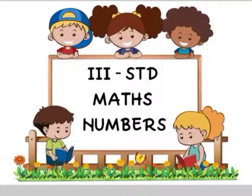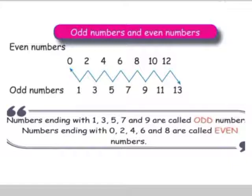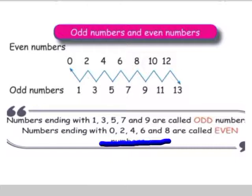Good evening children. Third standard, max numbers. In the previous class we studied about odd numbers and even numbers. The numbers 1, 3, 5, 7, 9 are called odd numbers. The numbers 0, 2, 4, 6 and 8 are called even numbers.